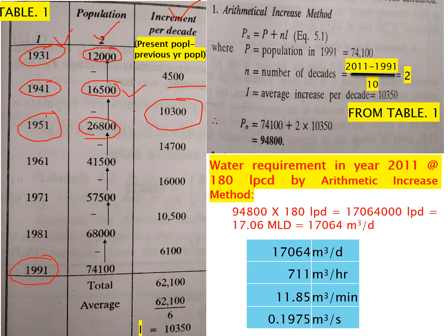When we find out average increment per decade, yhe poore jitne bhi increments mile hain — particular 10 years ke increases — unka total karna hai aur uska average nikalna hai. Here we can see there are 6 data values: 1, 2, 3, 4, 5, 6. So the total is 62,100, and divide by 6 — you get the average increment per decade, meaning in 10 years kitna average increment ho raha hai population mein.